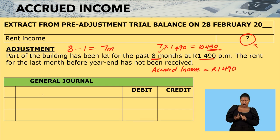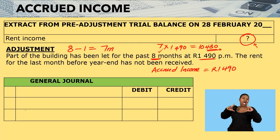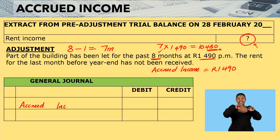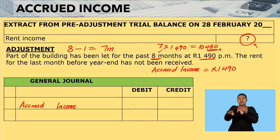How will I record it in the general journal? You have to remember that this is accrued income, and accrued income is considered an asset by the business — it is our money that we must still receive. So I will debit accrued income with $1,490 for one month.